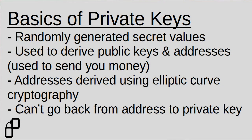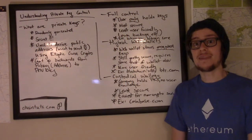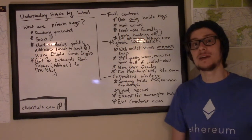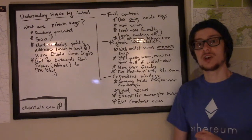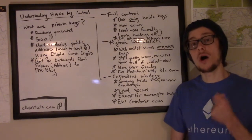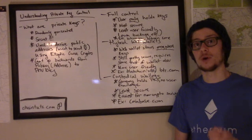It's really important to remember that you can't go backwards from a public address or public key to the private key that it was generated from. Private keys are secret — they're meant to be kept safe and secure, and they prove that you have access to and own a certain amount of a cryptocurrency.